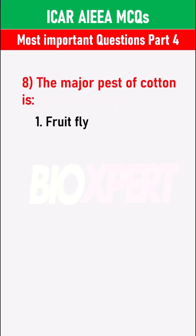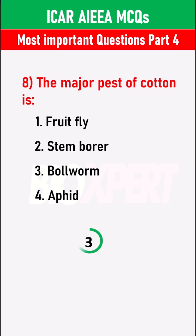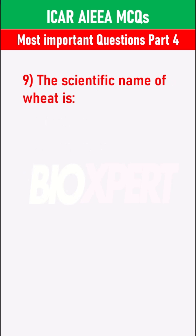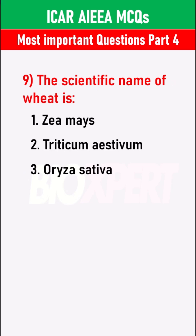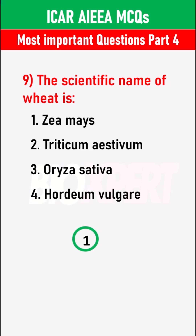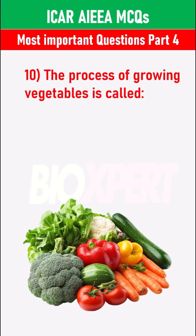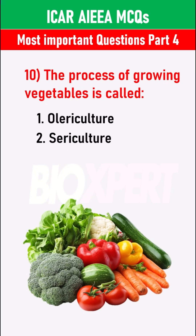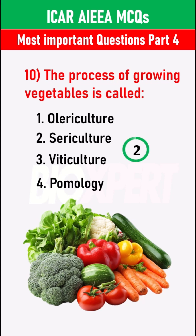The major pest of cotton is the boll weevil. The scientific name of wheat is Triticum aestivum. The process of growing vegetables is called olericulture.